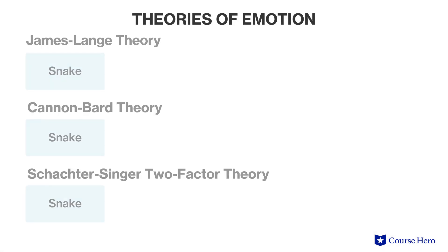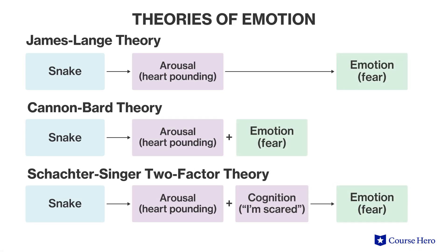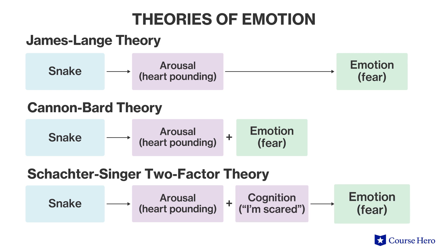The related Schachter-Singer two-factor theory also holds that physiological and cognitive factors contribute to emotion. It states that arousal is interpreted in context to produce an emotional experience. So that snake activating the sympathetic nervous system is cognitively labeled as fear because of the context — the vicious snake.